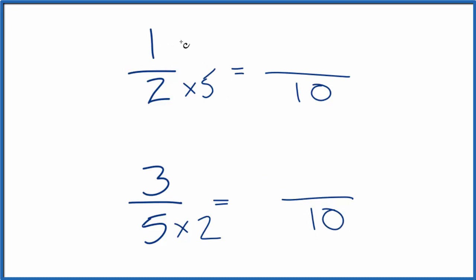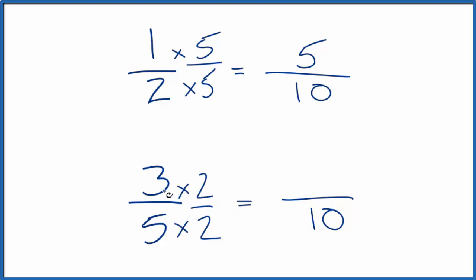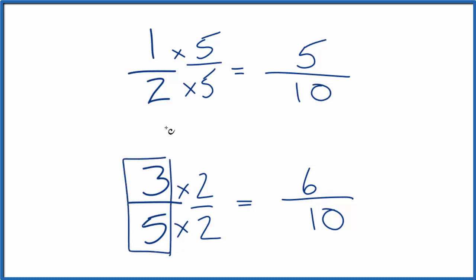We have to multiply the top by 5 as well, because 5 over 5 is just 1, so we won't have changed the actual quantity. So 1 times 5 is 5, giving us 5 tenths. Down here we multiply by 2 over 2, and 3 times 2 is 6, giving us 6 tenths. We can clearly see that 6 is larger than 5 with the same denominator, so 6 tenths is larger than 5 tenths — meaning 3 fifths is larger than 1 half.